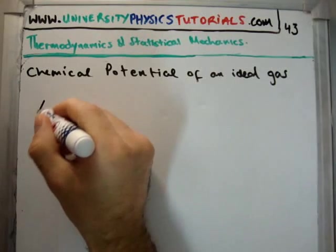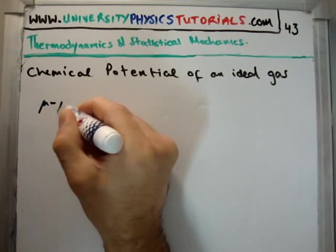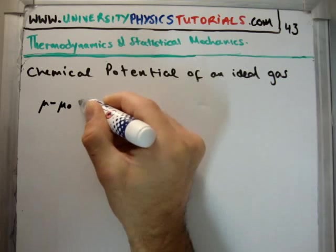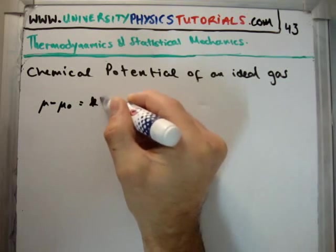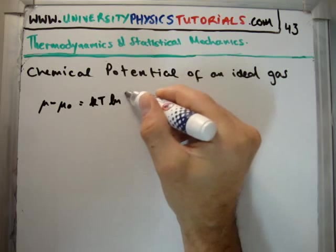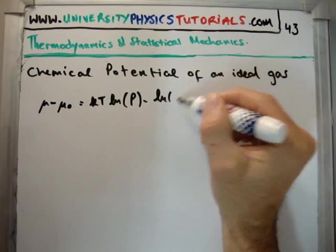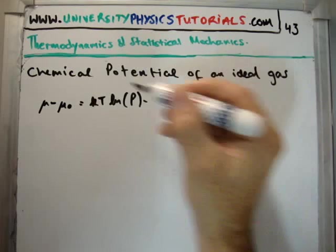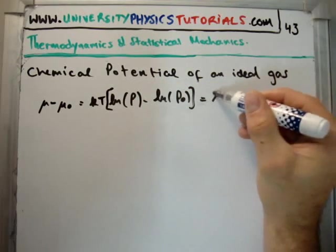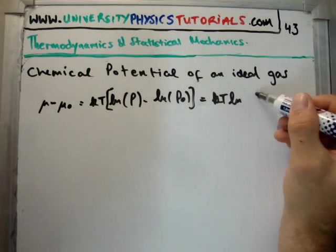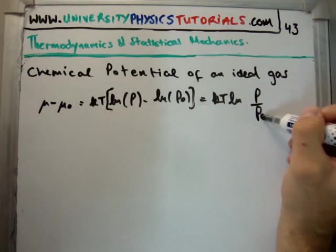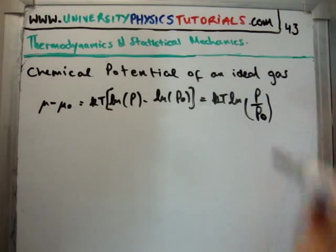So that integral turns out to be μ minus μ zero is equal to KT outside the natural logarithm of P minus the natural logarithm of P zero, or is KT log(P over P zero).